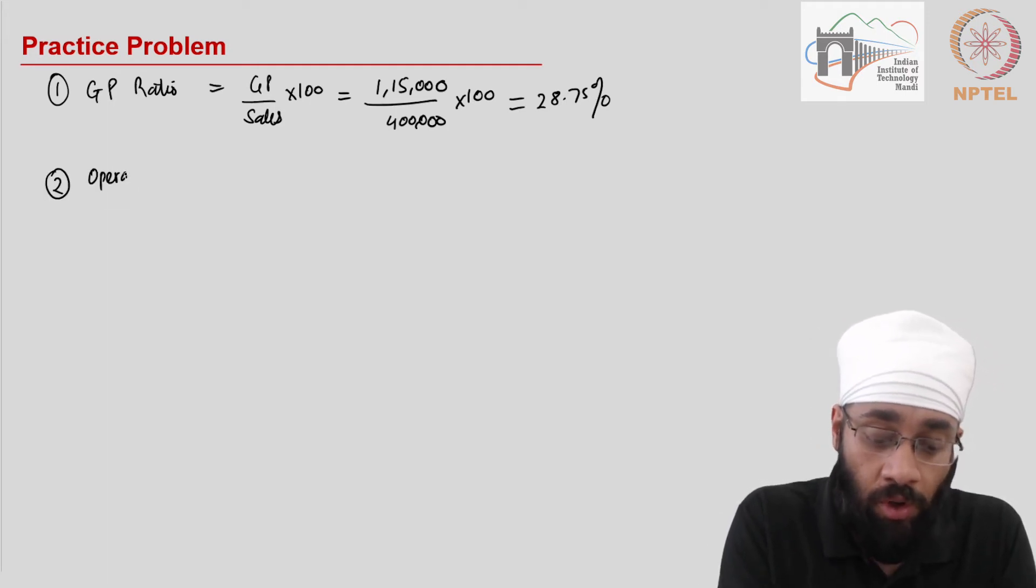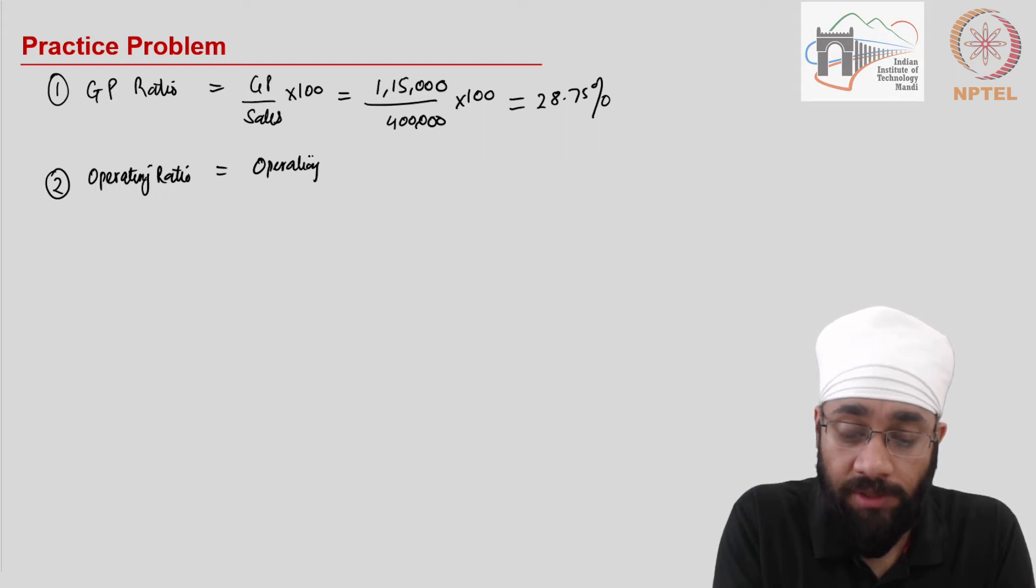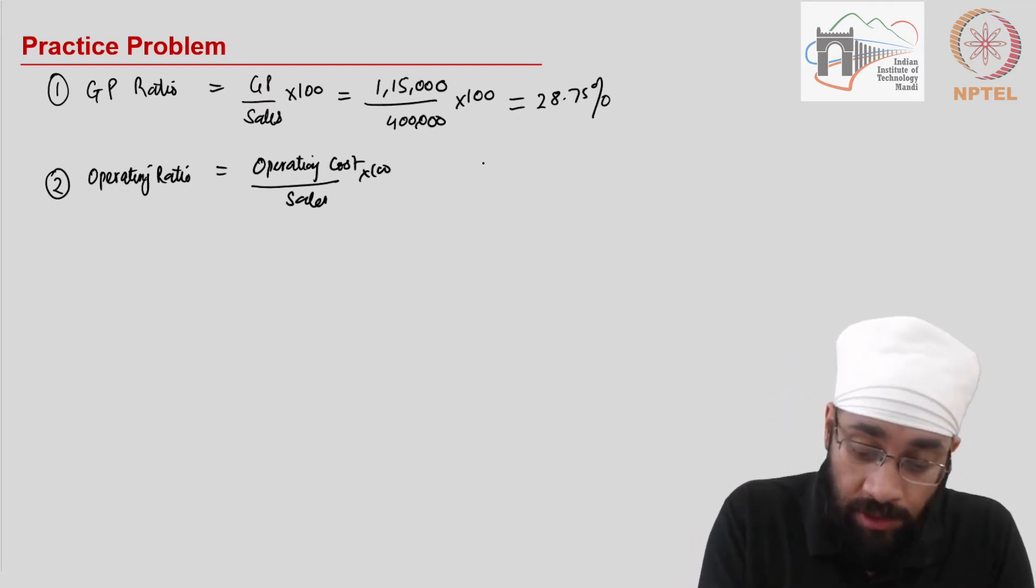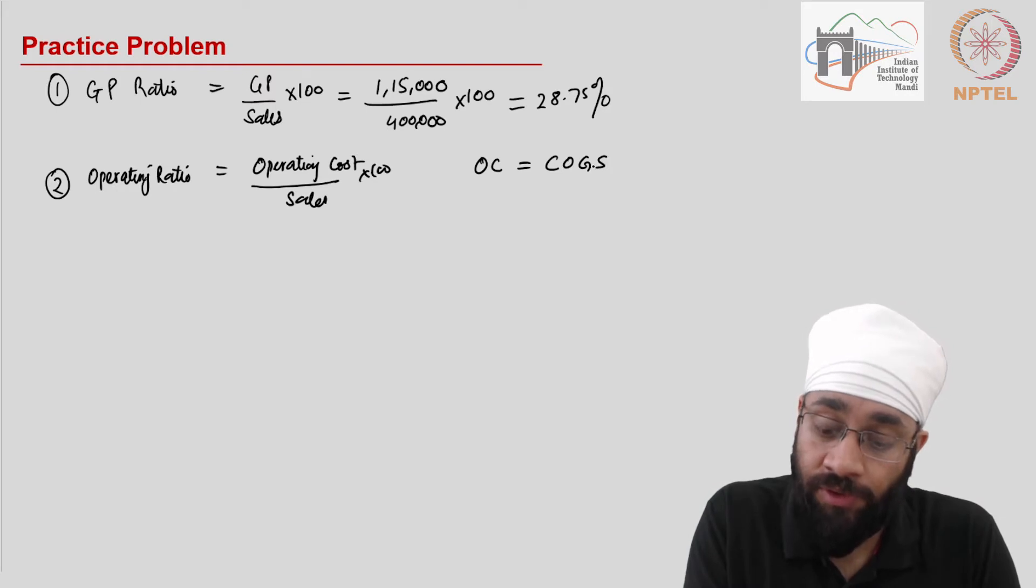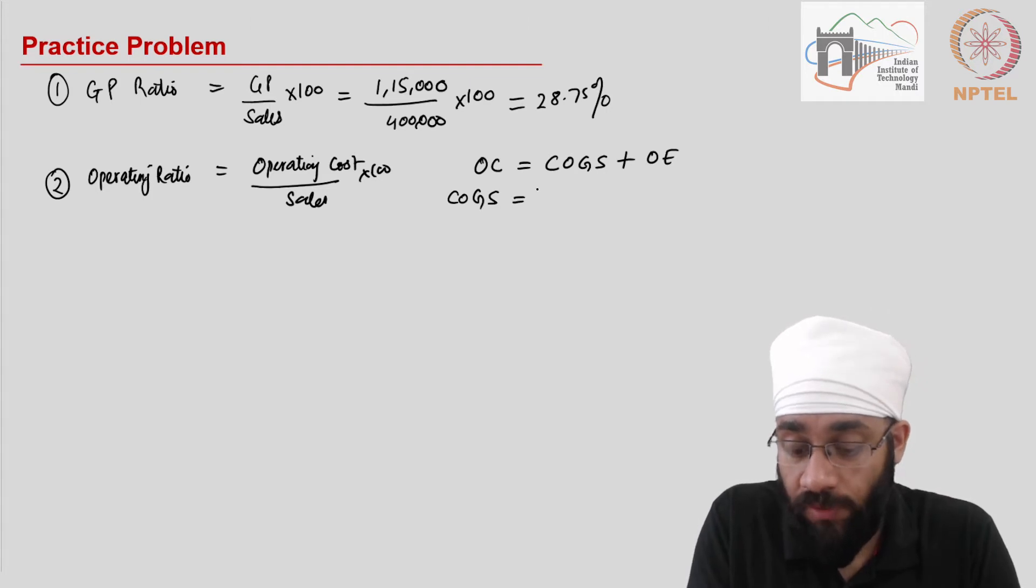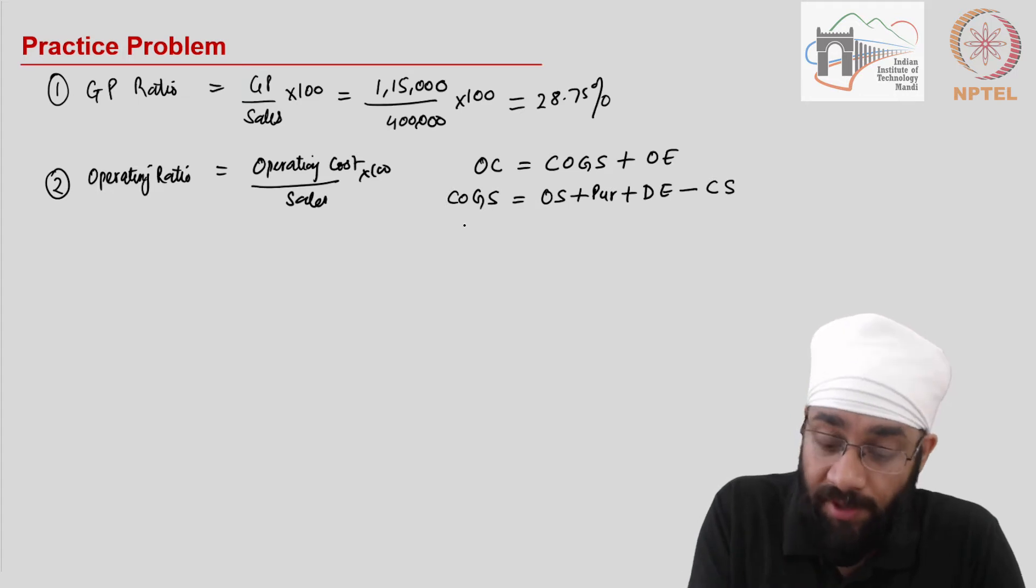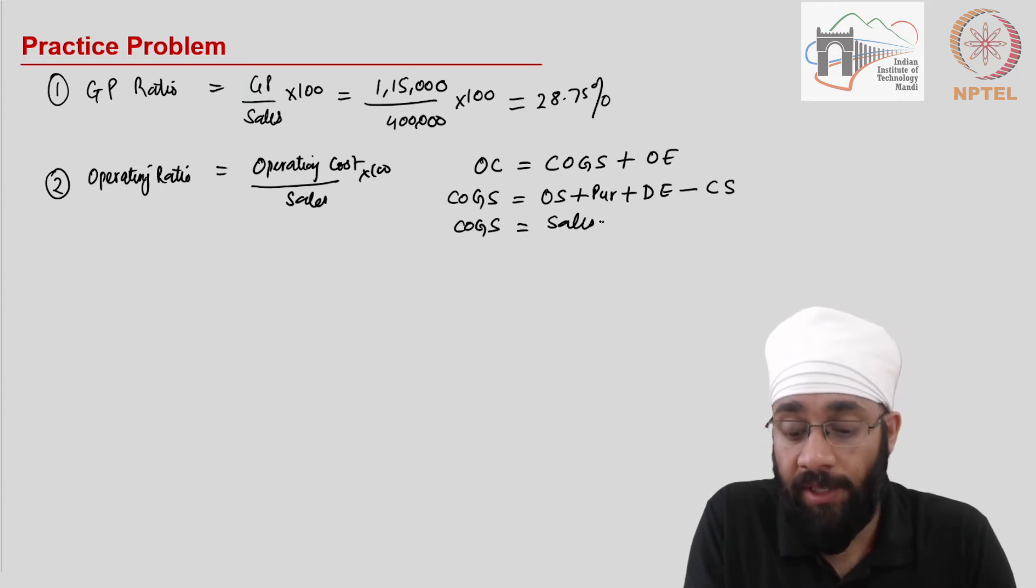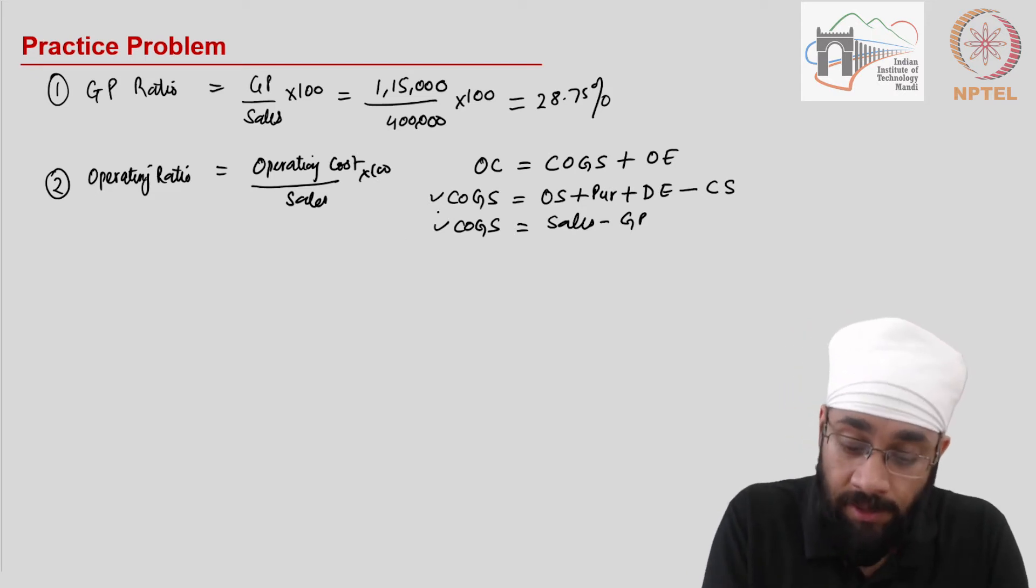The next ratio is called operating ratio. The operating ratio is a ratio of the operating cost and the sales of the business. What is operating cost? The operating cost is equal to cost of goods sold plus the operating expenses, the indirect expenses which are operating in nature. Then what are cost of goods sold? Cost of goods sold is equal to opening stock plus purchases plus direct expenses minus the closing stock. Alternatively, you can also figure out cost of goods sold by deducting gross profit from sales. We can use both these methods to verify our numbers as well.